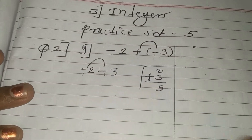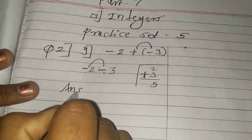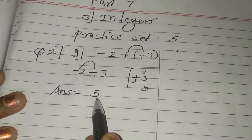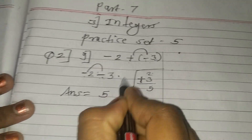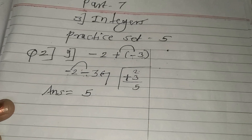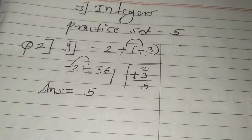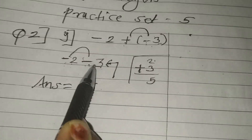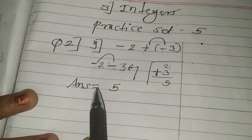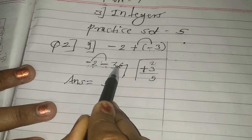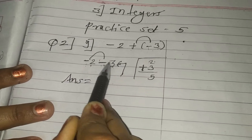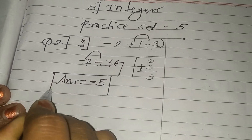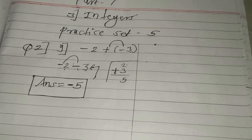This is your rough work — you may do it on a rough page. So your answer column writes 5. When giving the sign to the answer, go to this 2nd step. Here the big number is 3. From 2 and 3, the big number is 3. What is the sign of 3? Minus. So our answer sign is also minus. Solve the sign issue very carefully.